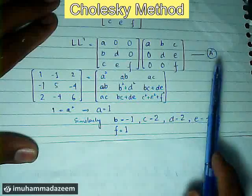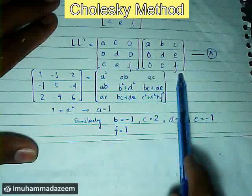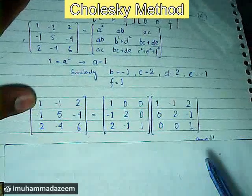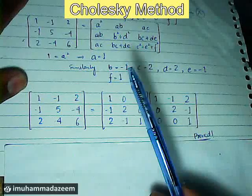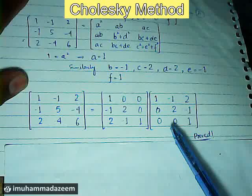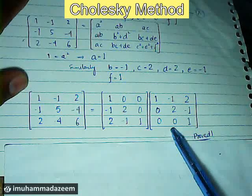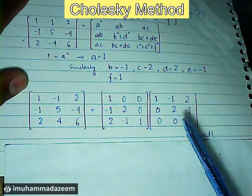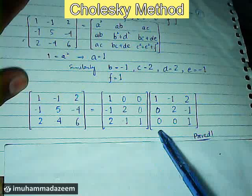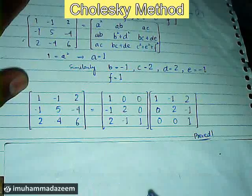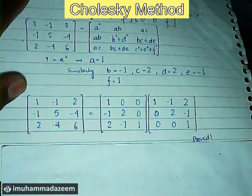Carrying on this procedure and putting these values into the lower triangular matrix, we have finally found that matrix A equals the lower matrix L times the transpose of that lower matrix L-transpose. I challenge you — this is the correct answer. You can multiply these two matrices and get back the same original matrix A.